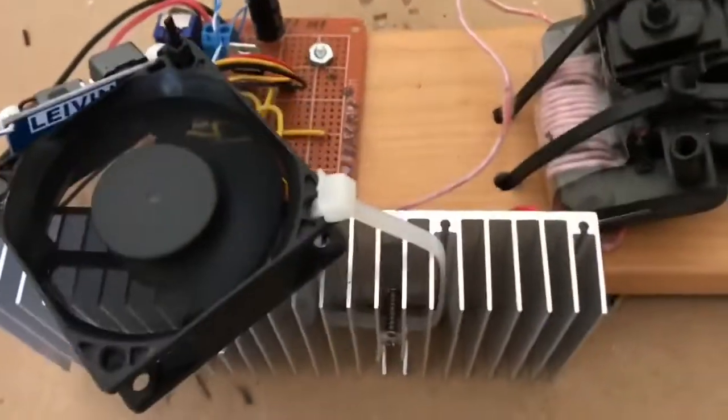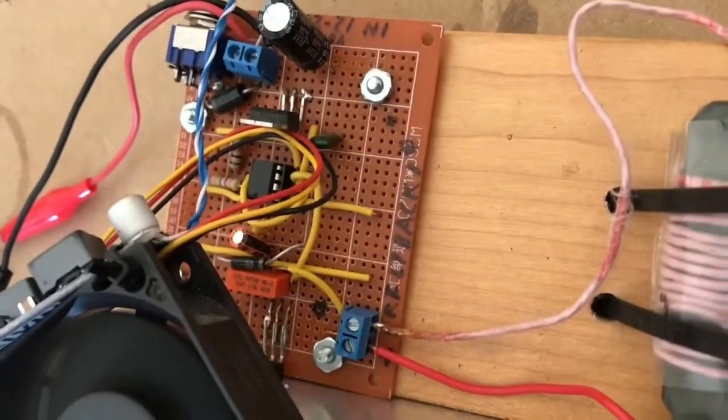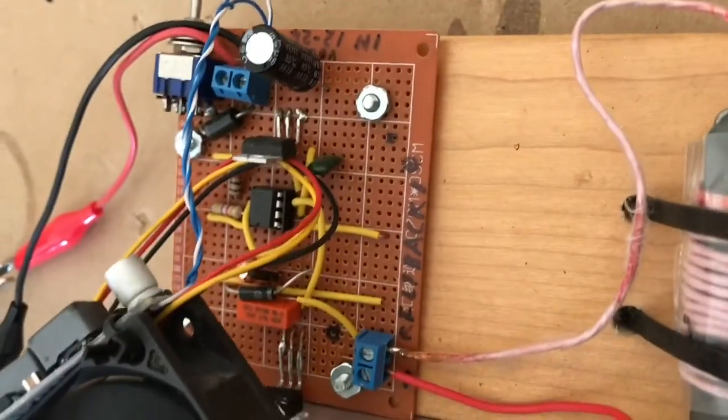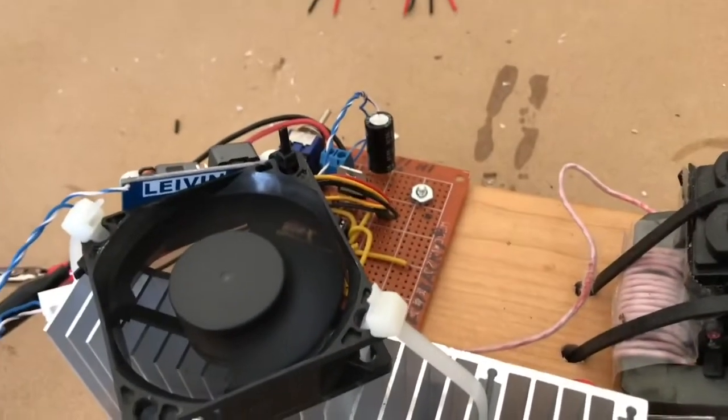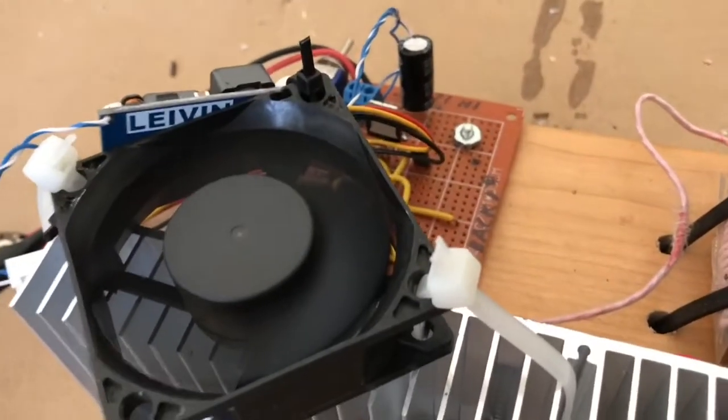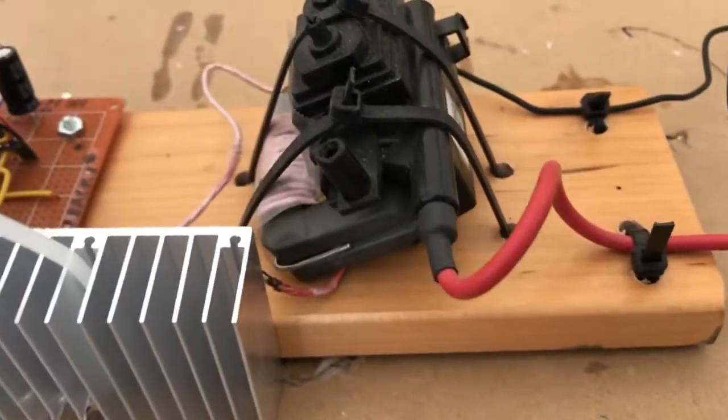The high voltage comes from this setup which is a 555 timer driven flyback transformer. It uses a MOSFET to generate high frequency across the primary of the flyback and puts out about 15 to 20 kilovolts of DC static electric power.